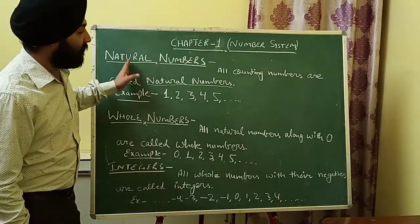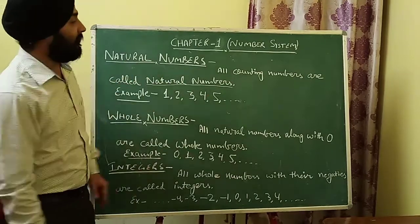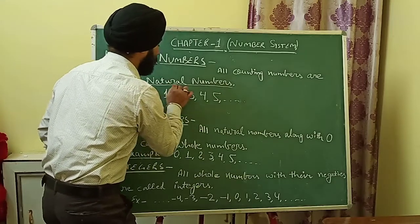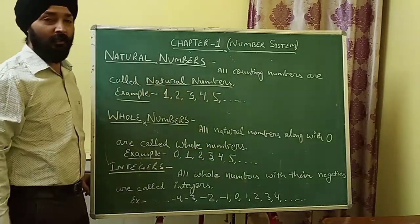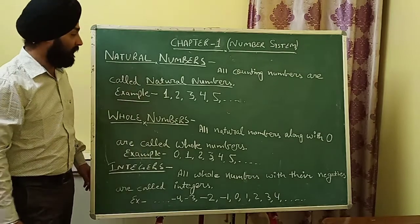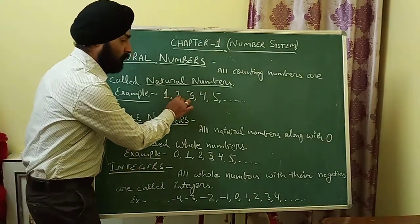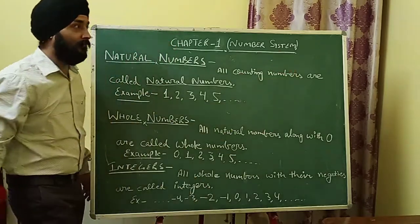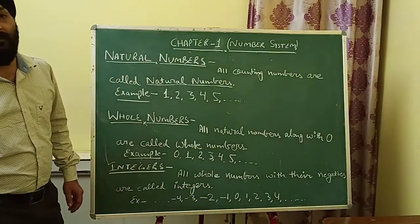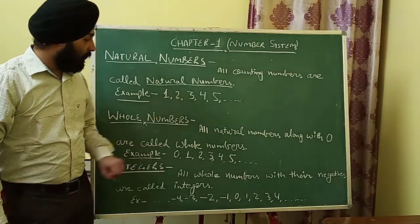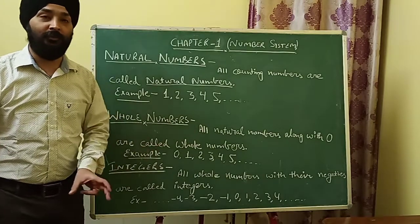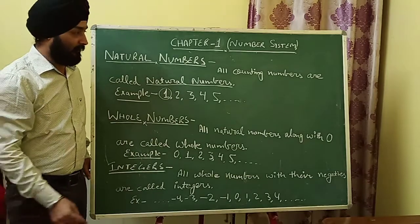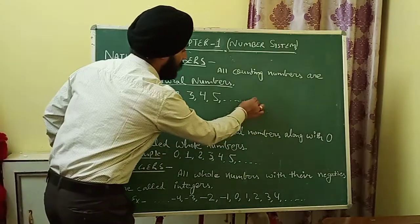First of all, I am going to explain what are natural numbers. All counting numbers are called natural numbers. For example: 1, 2, 3, 4, 5 and so on — infinite. The smallest natural number is 1.